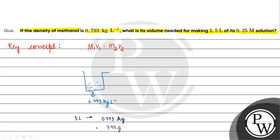Because 1 kg is 1000 grams, so 0.793 kg multiplied by 1000 gives us 793 grams. In 1 liter, 793 grams mass is present.